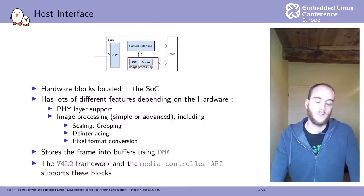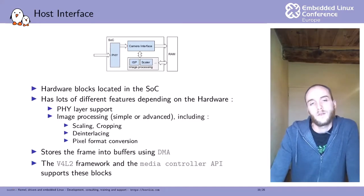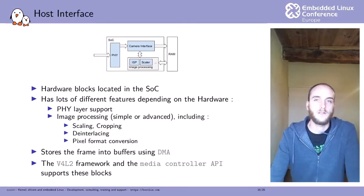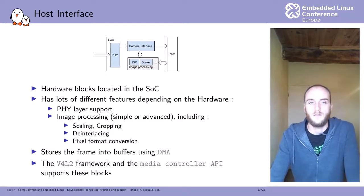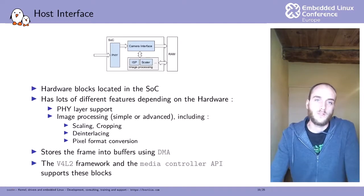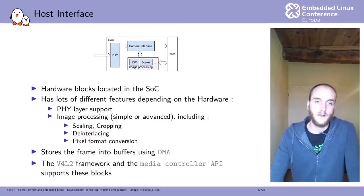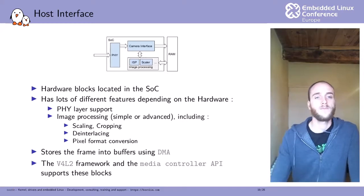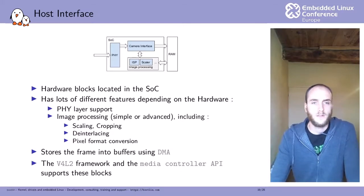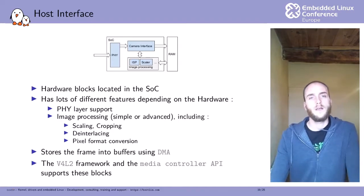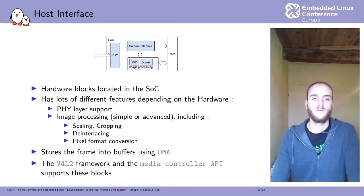The host interface is what you find inside your system-on-chip. Every vendor has its own approach — sometimes including image processors, sometimes not, sometimes with firmware running inside. Basically, the host interface is a collection of hardware blocks: one block decodes the incoming PHY signal, then there is image processing such as scaling, cropping, deinterlacing, and pixel format conversion. The camera interface then stores the result into a memory buffer using DMA, with full Video4Linux framework support for all these blocks.